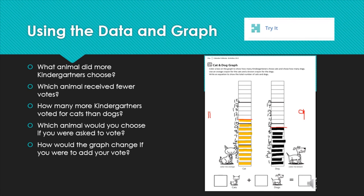Which animal received the fewer votes? Which one is less? Fewer, remember, means less. That's correct. The dog. The dog had less. It had 2 less than the cat.